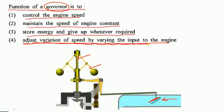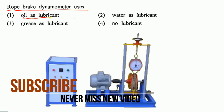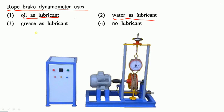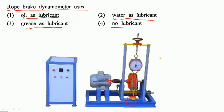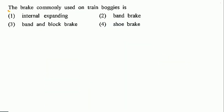Option 4 — adjust variation of speed by varying the input to the engine — is the correct option. Next: rope brake dynamometer uses oil as lubricant, water as lubricant, grease as lubricant, or no lubricant? In a rope brake dynamometer we put a rope with weights to measure power or torque, and we don't use any lubrication. So option 4 — no lubrication — is the correct option.